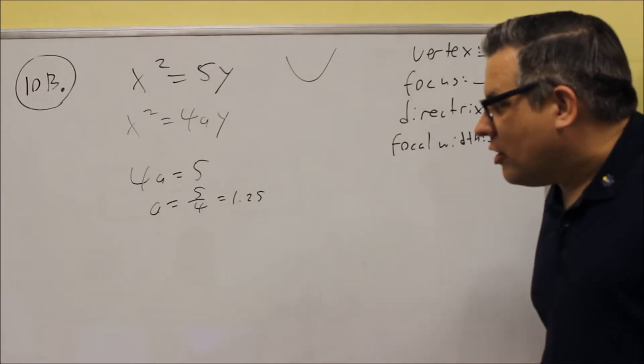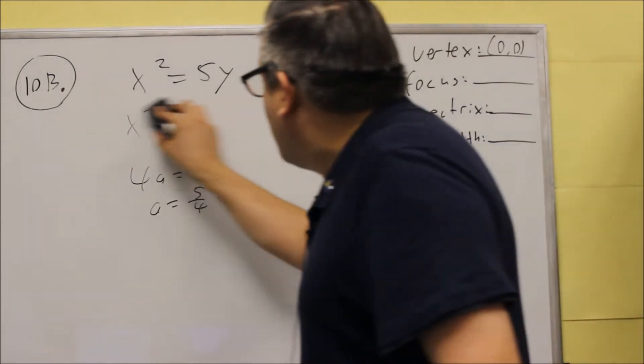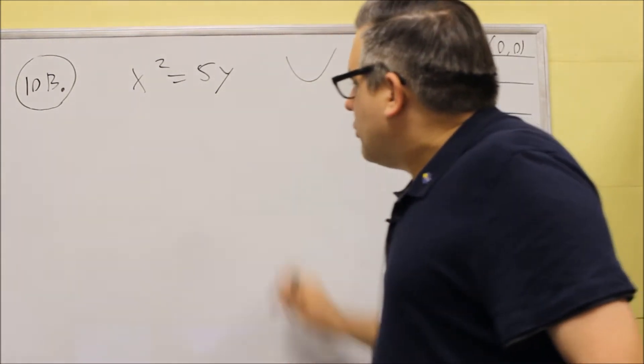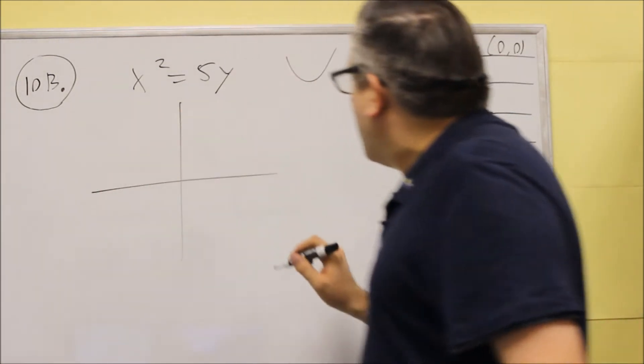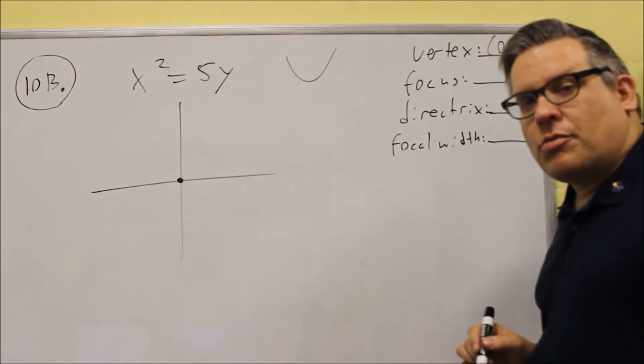Since we know the a value is 1.25, that's going to help us now to draw the graph. We know it's going to open up, and we know the vertex is going to be at (0,0).